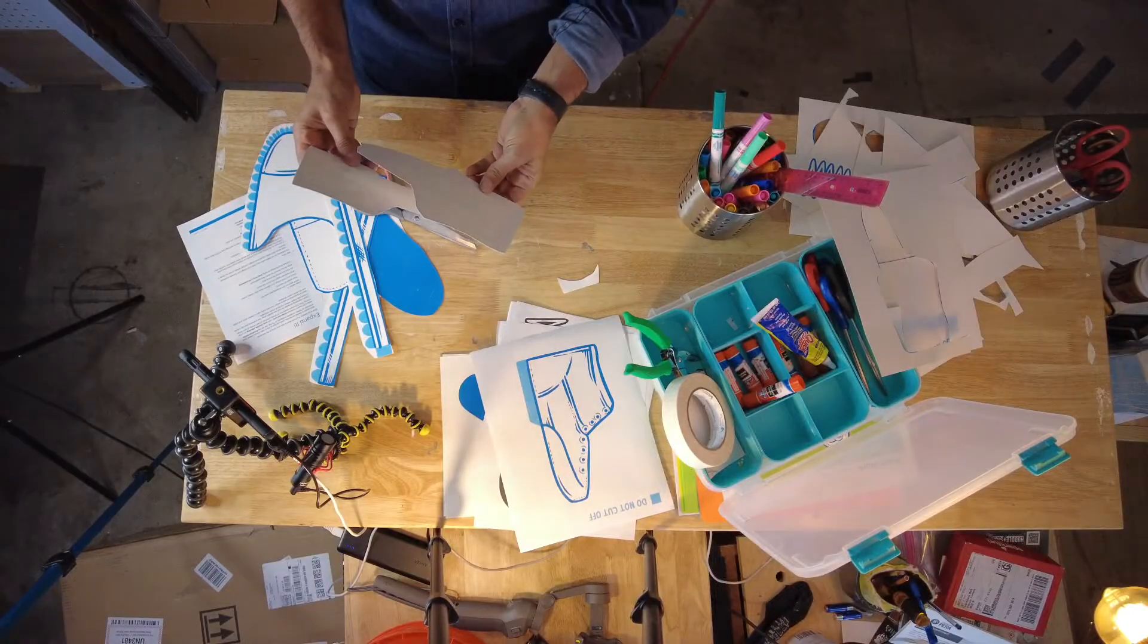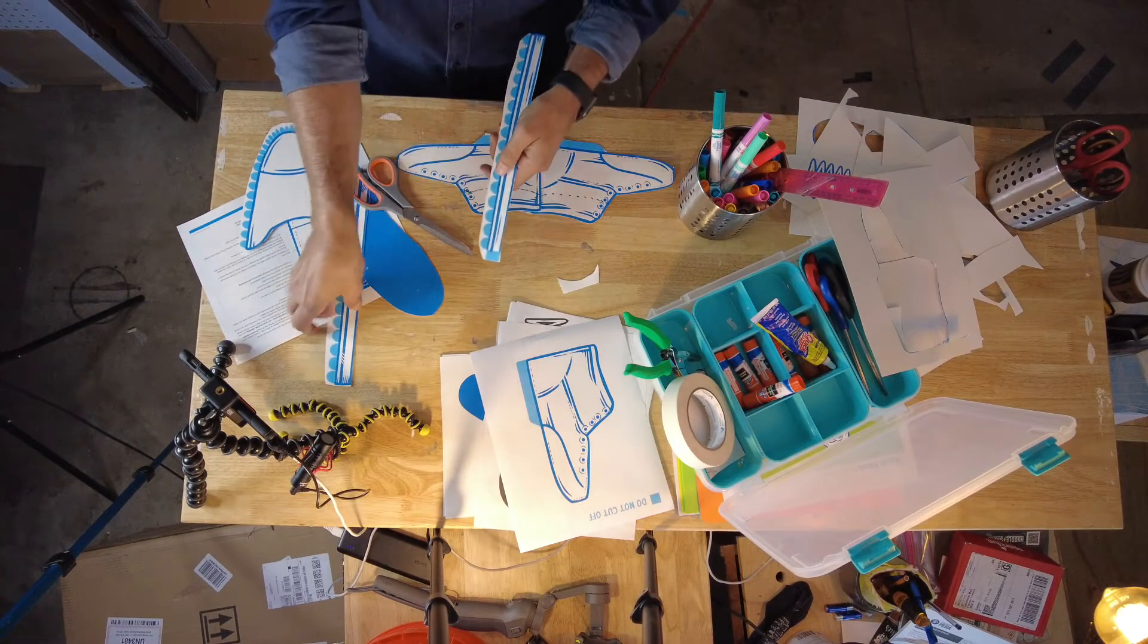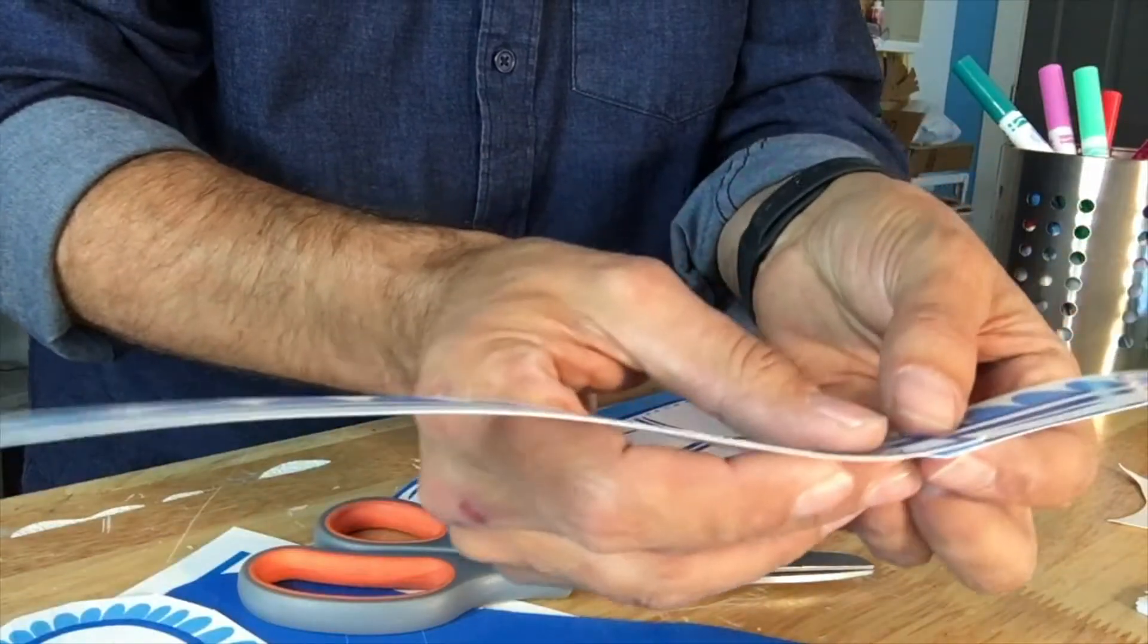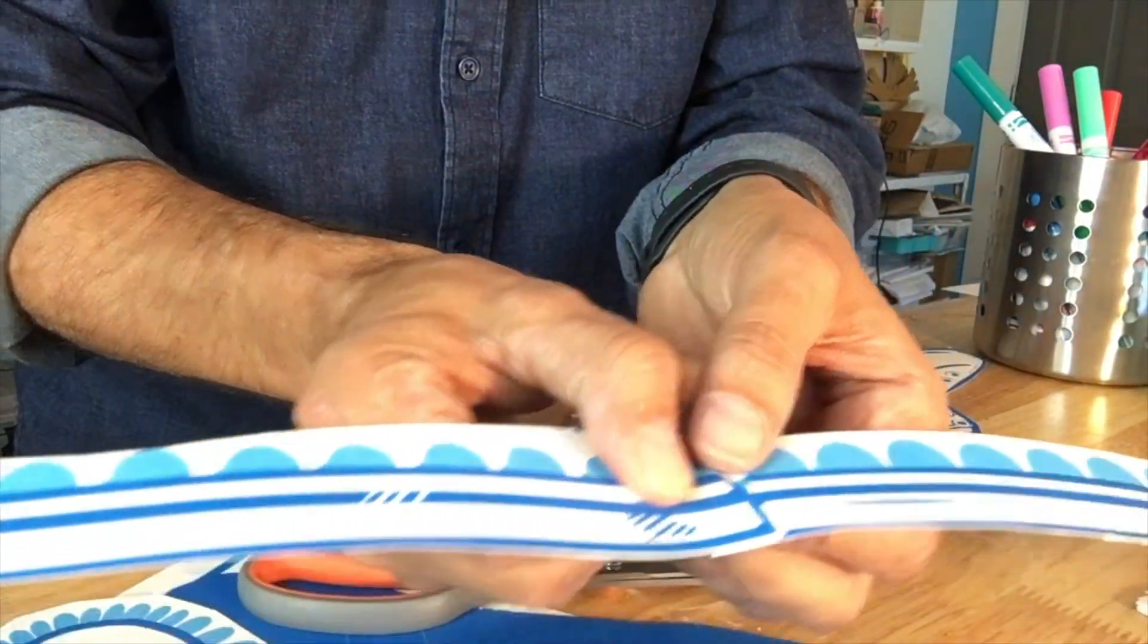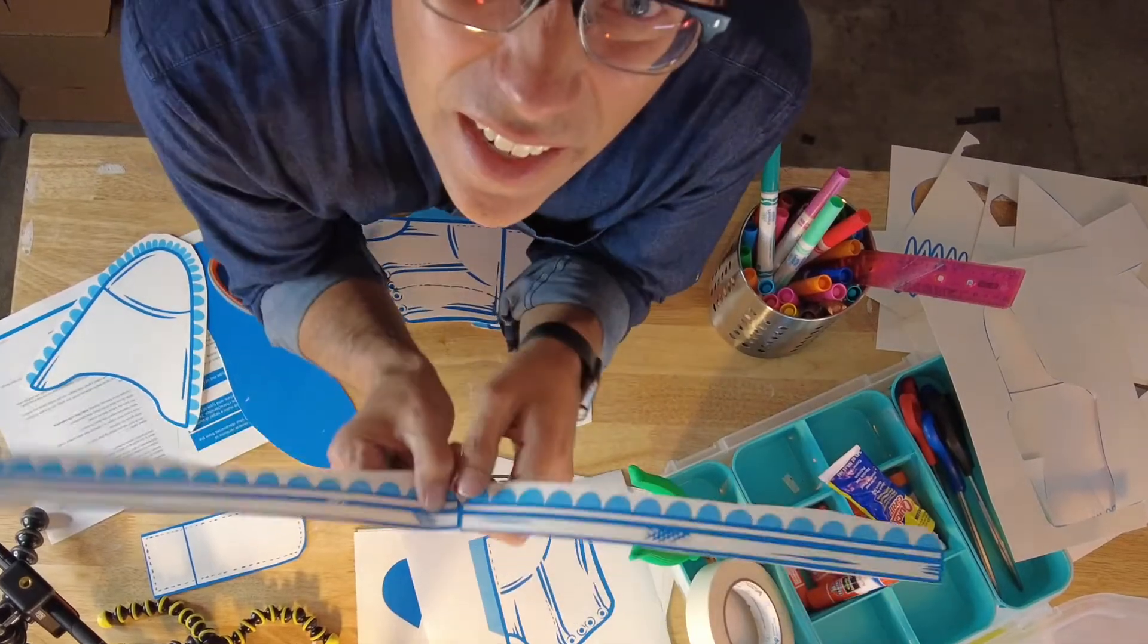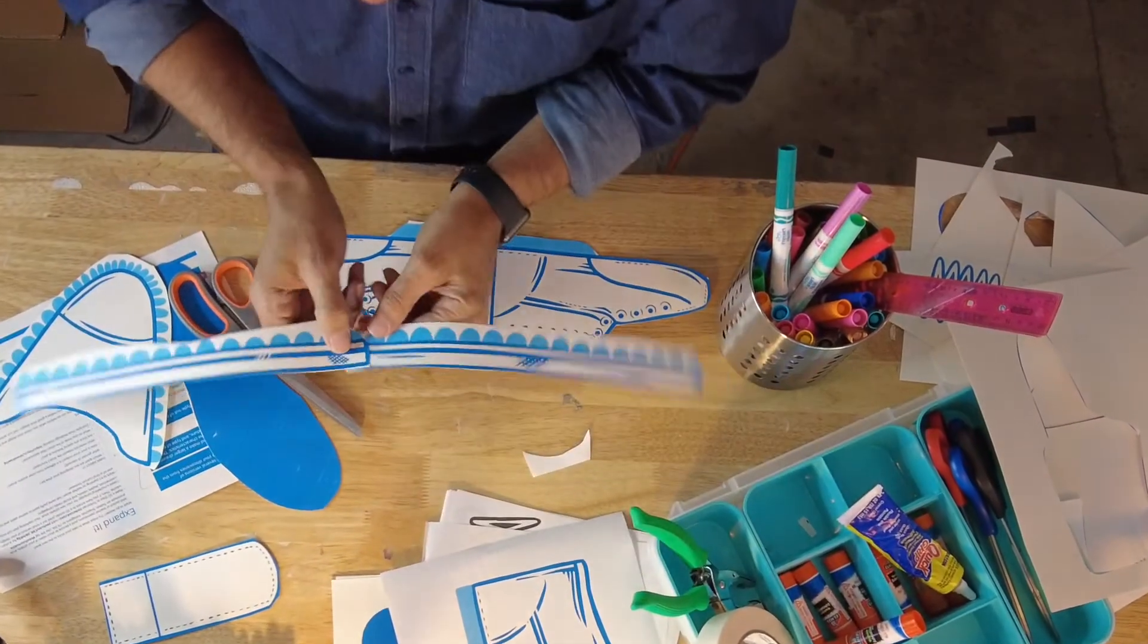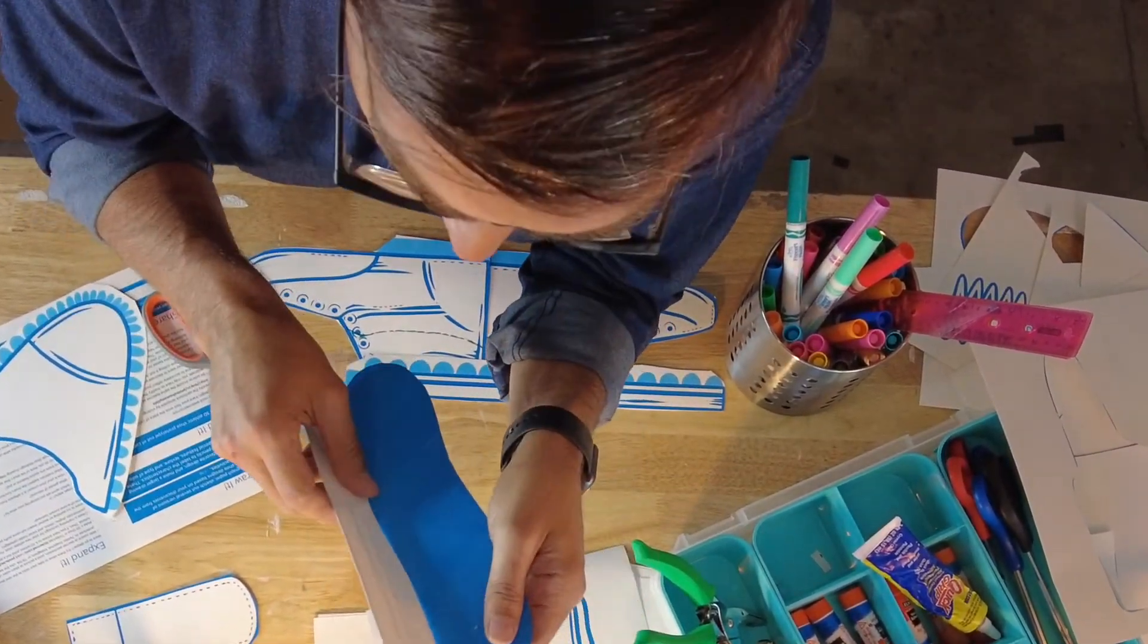These two pieces right here are going to basically go together, right, like this. So if you're doing that, you want to basically be able to put these two pieces together, and then they're gonna wrap around the base of your shoe.